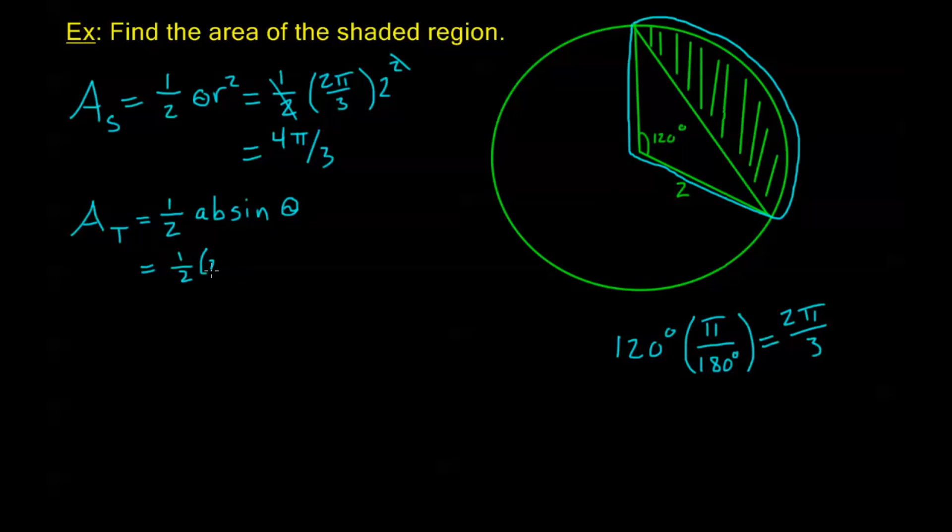So, I have 1 half times 2 for a, times 2 for b, sine of 120 degrees. This 2 and this 1 half cancel, and we're just going to get 2 sine of 120 degrees. In the last example, we saw that that's just square root of 3 over 2. Or, in other words, this is just going to be the square root of 3.